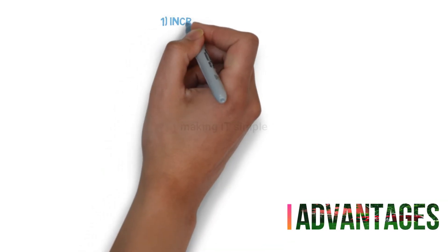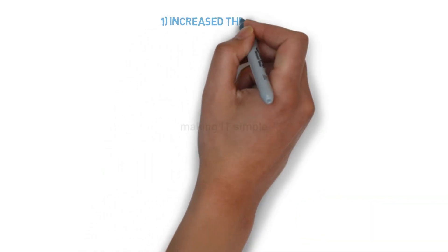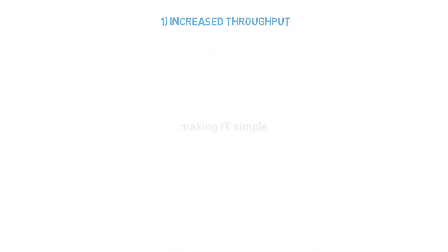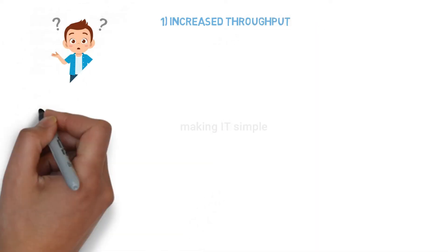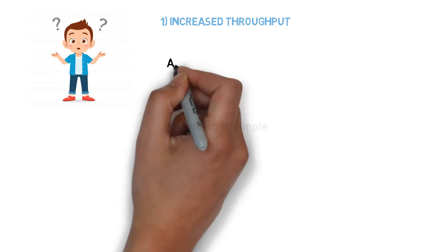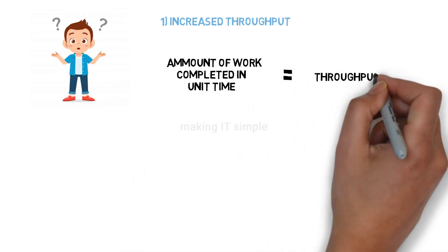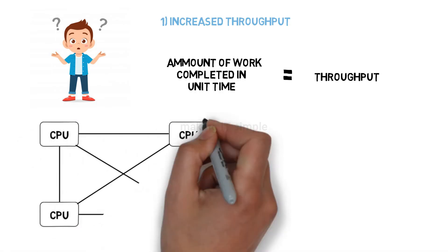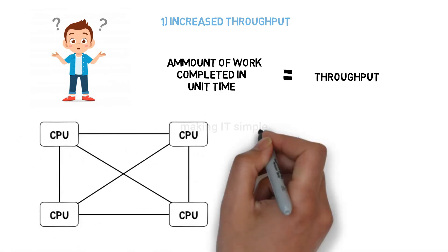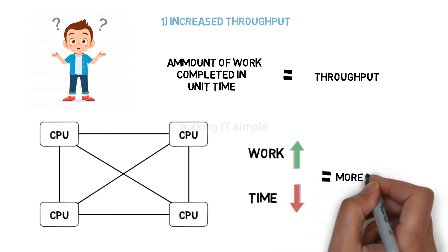Let's see the advantages of multi-processing operating system. First advantage is increased throughput. What is throughput? Throughput is amount of work completed in a unit of time. So when we have multiple processors available, we will complete more work in less time. So the throughput is increased in multi-processing.